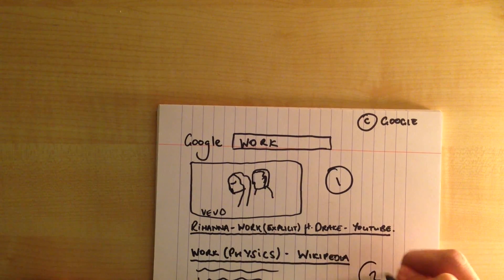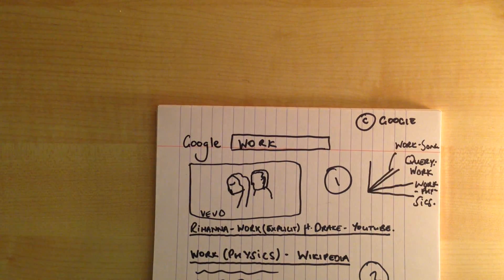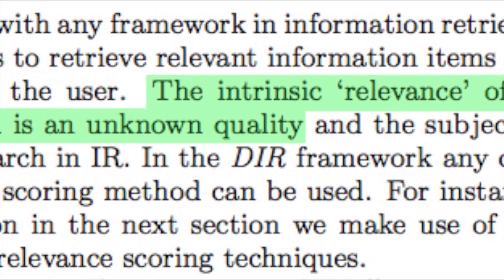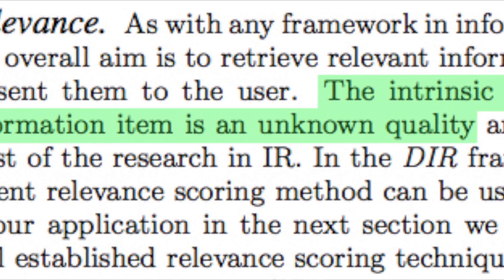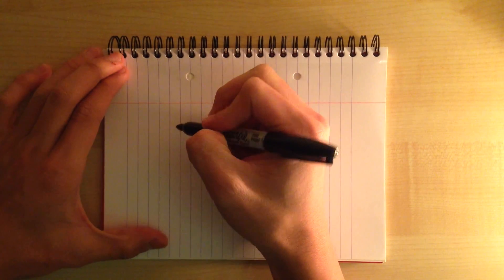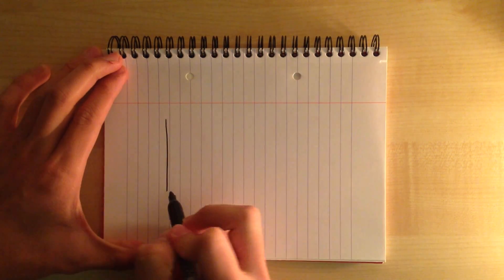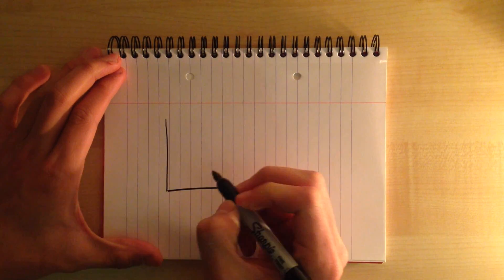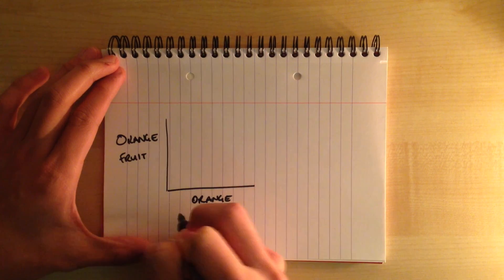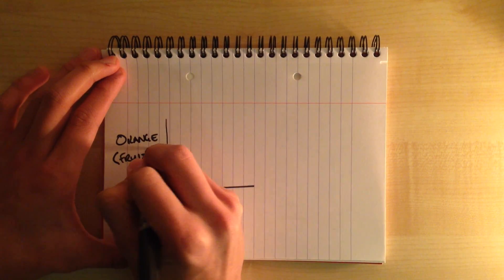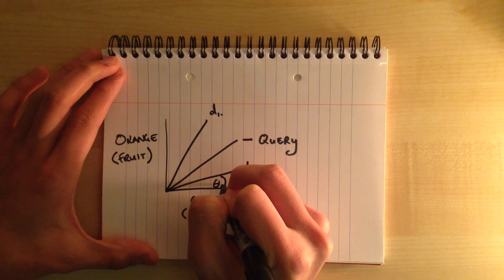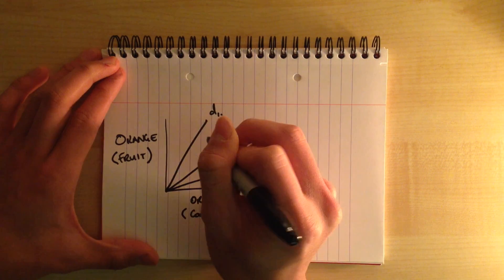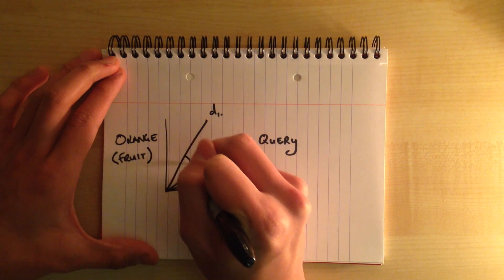In a paper written by UCL research students Mark Sloan and Jun Wang, the intrinsic relevance of an information item is an unknown quality. Therefore, various different methods of displaying relevant information to a query exist. In this video we are looking at the vector space model, although other models used are the standard boolean model, extended boolean model, and fuzzy retrieval.